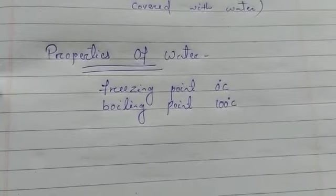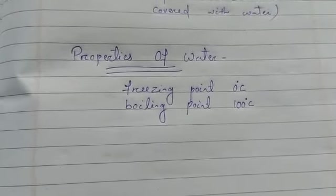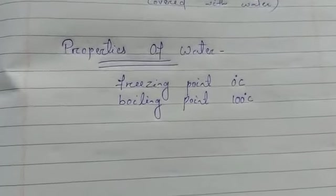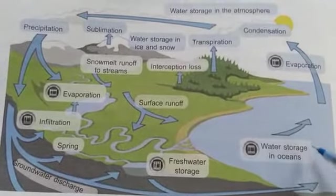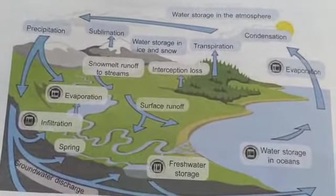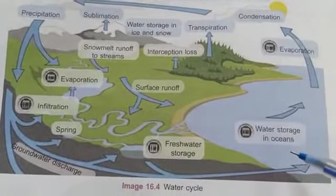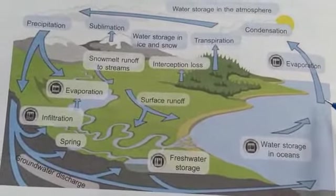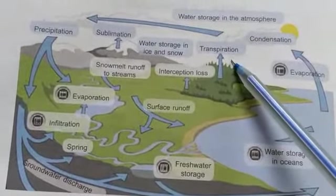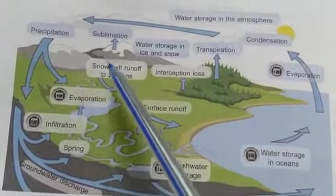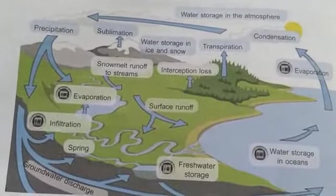Water can easily change between all three states — from solid to liquid, liquid to gas, or gas to liquid. It gets replenished in nature through the water cycle, which is the continuous or cyclic movement of water on earth. Water evaporates from all water bodies, and plants also lose water through transpiration.